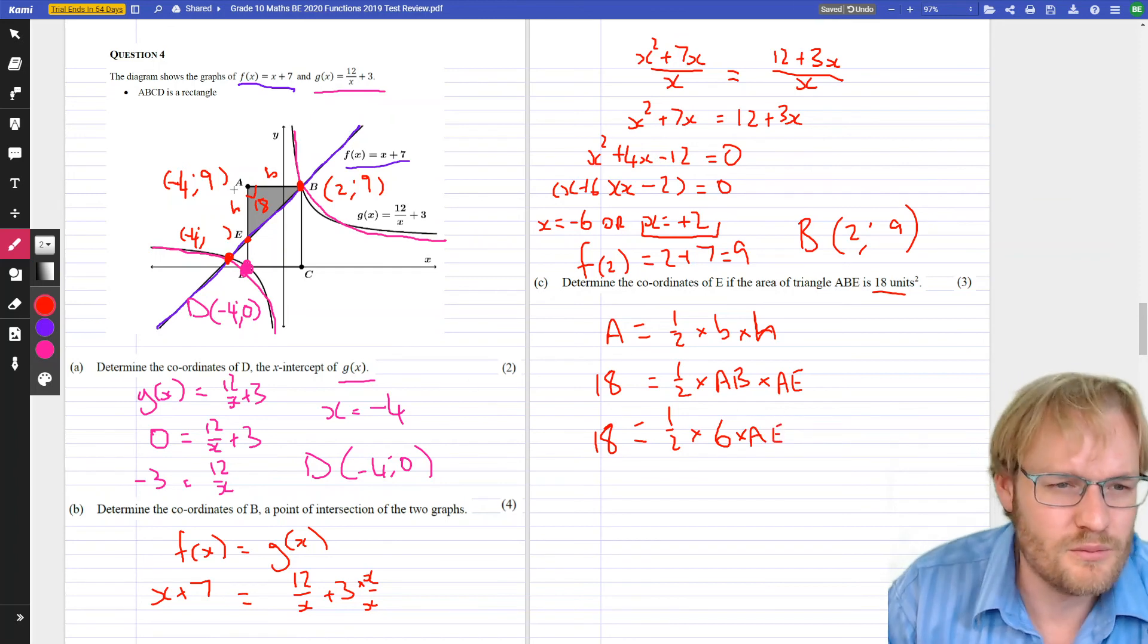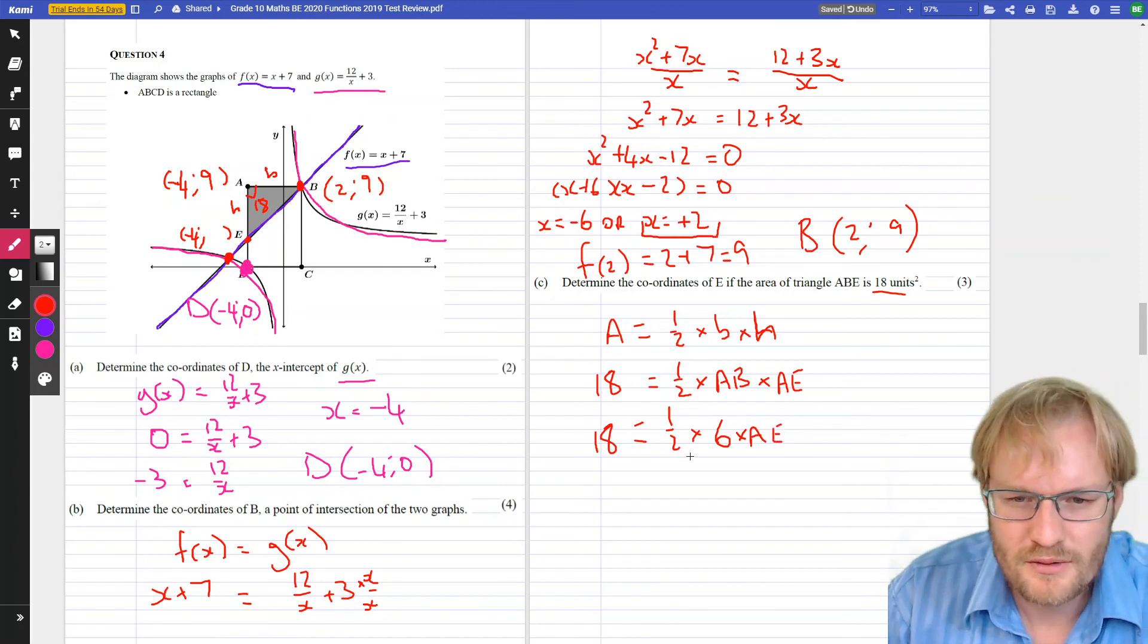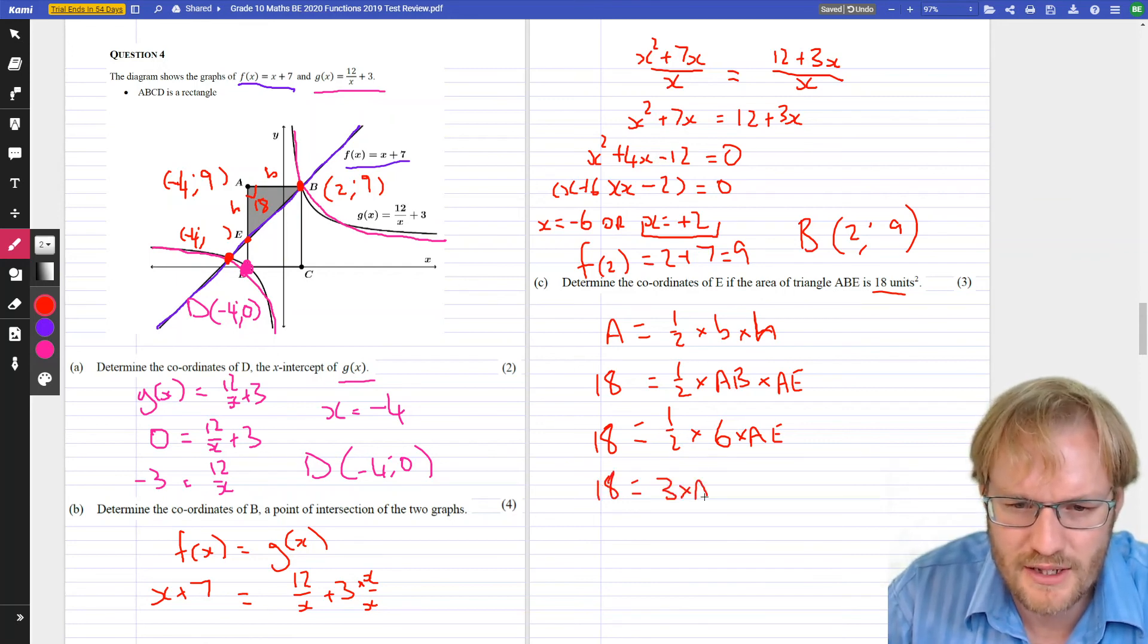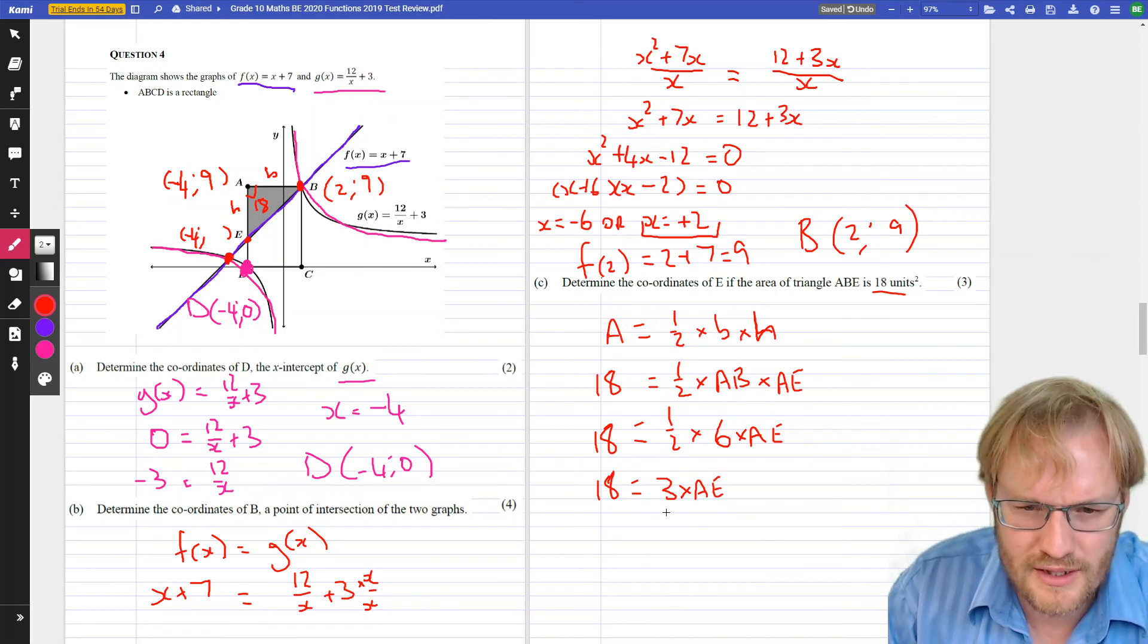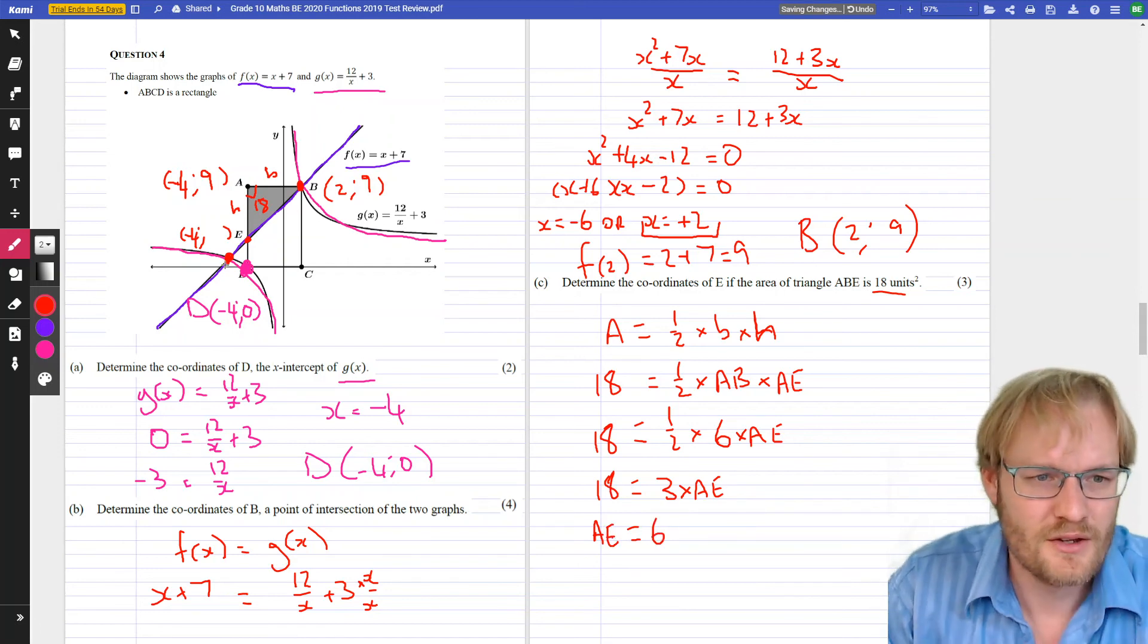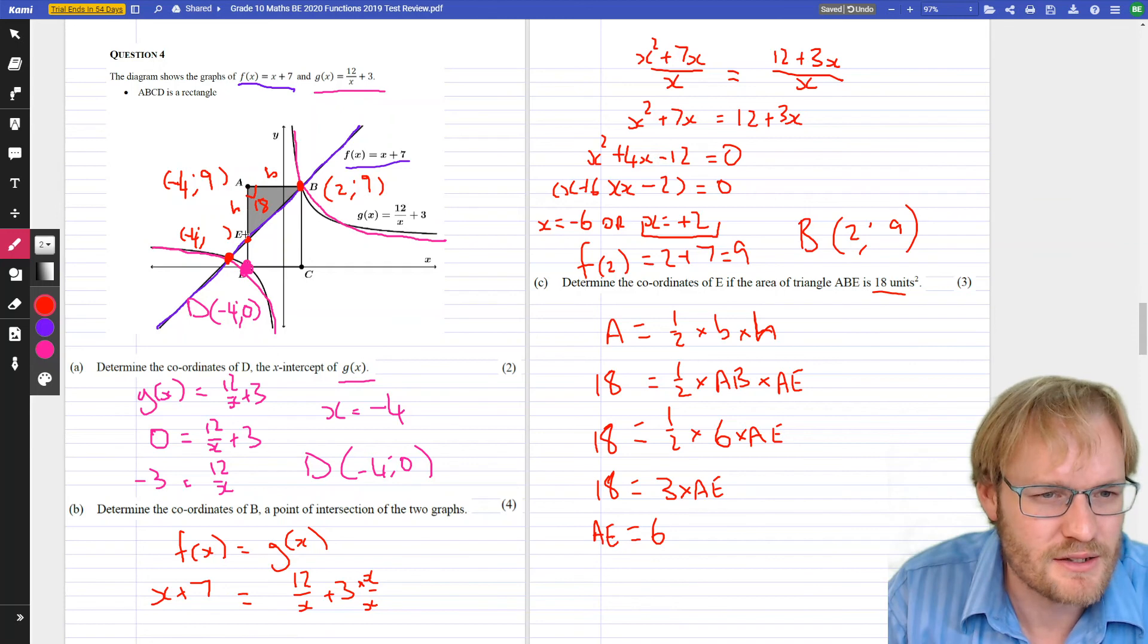But we've got lots of things on our equation. So, 18 equals half times 6, 3 times AE. In other words, what must AE be? Well, if AE is 6, then 3 times 6 gives us 18. So, that distance must be 6.